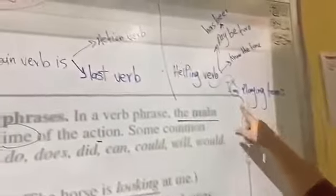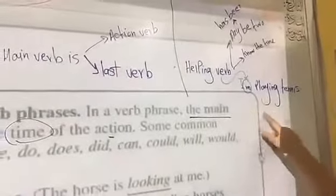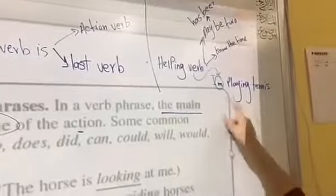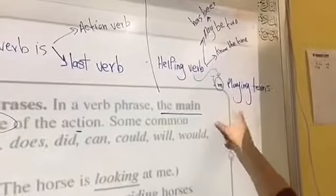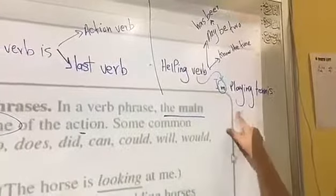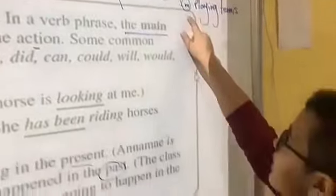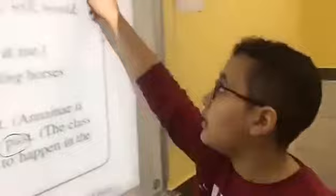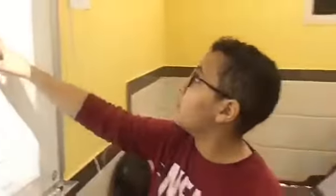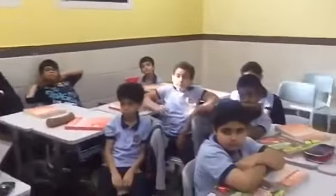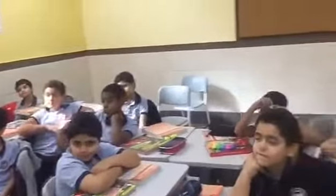For example: 'I am playing tennis.' Here, 'playing' is the main verb and 'am' is the helping verb. The helping verb also tells you the time of the action — the tense of the main verb.